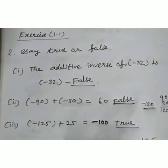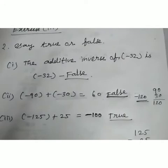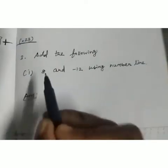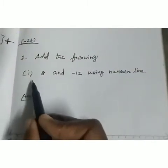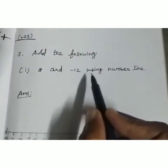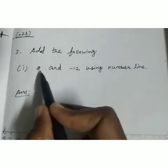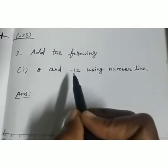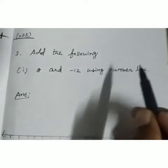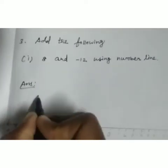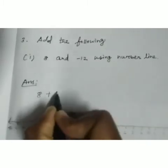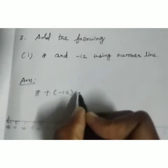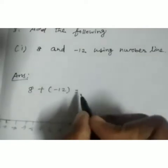Now we go to question number 3: add the following. First question — add 8 and minus 12 using a number line. So we find the answer to 8 plus minus 12 using the number line.